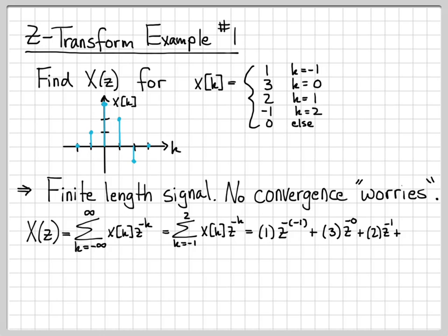And then finally, the last term is when K is equal to 2, I'll have X of 2, which is negative 1, times Z to the negative 2, because K is 2. So what I end up with is just Z to the 1, plus 3, plus 2 Z to the negative 1, minus Z to the negative 2. So this is the Z transform of my discrete time signal X of K. It's a polynomial in Z, and this is the Z transform of the signal.